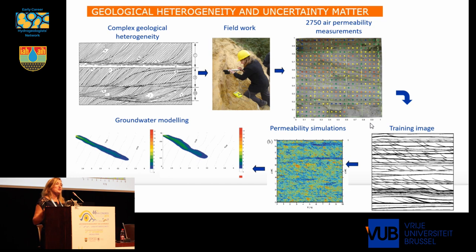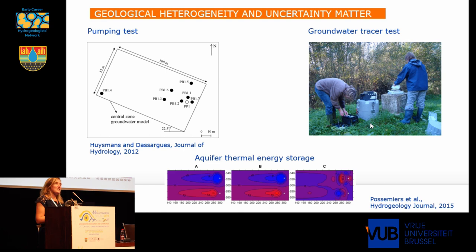We have put all this information into groundwater flow and transport models and we could see, for example, that indeed these clay drapes, although they are small and although they are thin, they do have a significant effect on how a contaminant plume would move in this type of sand.